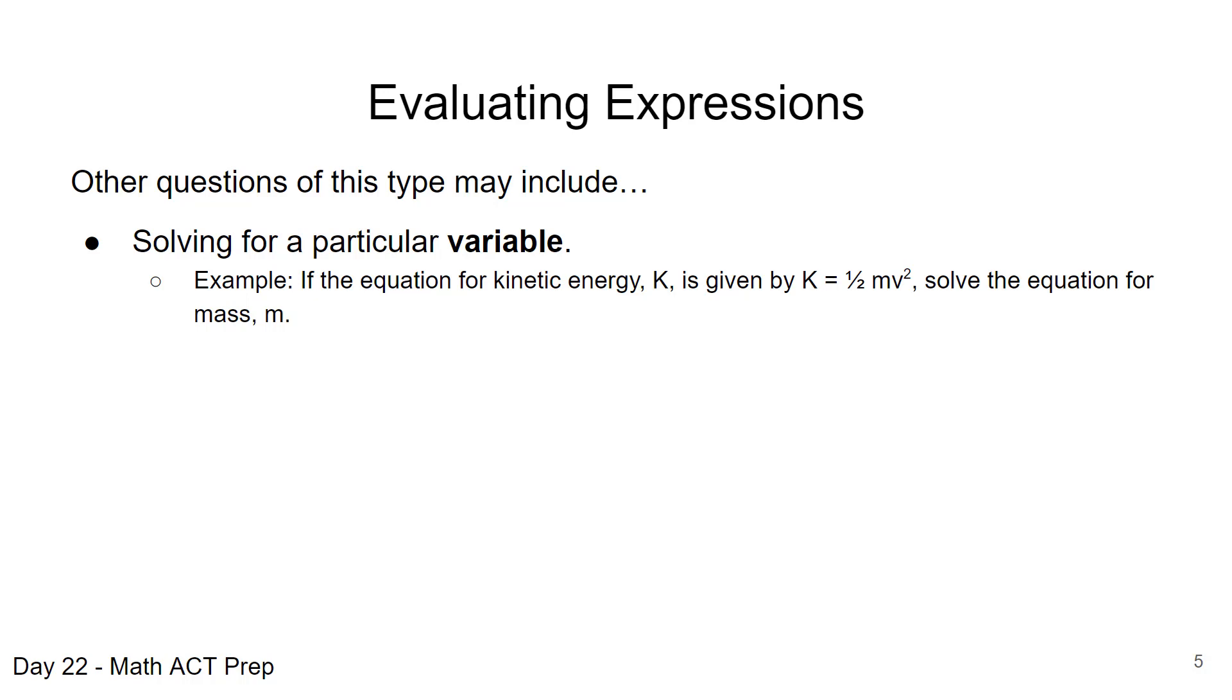So in this case we're set up as K equals, we want to set it up as m equals. So what we'll need to do is we want to move the one-half and the v squared over to the left-hand side so that we just have m. So to get rid of the one-half we'll multiply by two on both sides, and then to get rid of the v squared since it's showing multiplication we'll divide through by v squared. So we end up with m equals 2K divided by v squared. So we're just solving for a different variable.